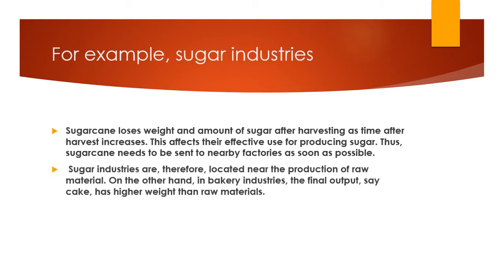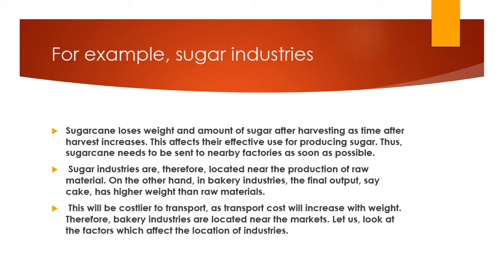Because of this, sugar industries are always located near the sugarcane cultivation area. In contrast, a bakery industry has a lightweight final product but high-weight raw materials. Since transport cost increases with weight, it would be costlier to transport the raw materials over long distances. Therefore, bakery industries are located near the market, where goods can be easily transported.